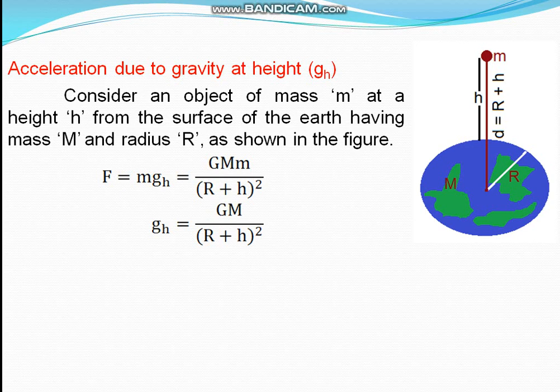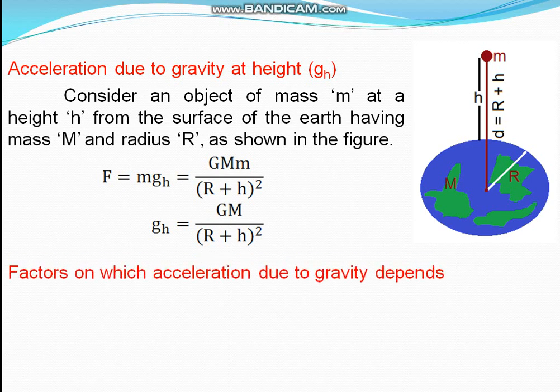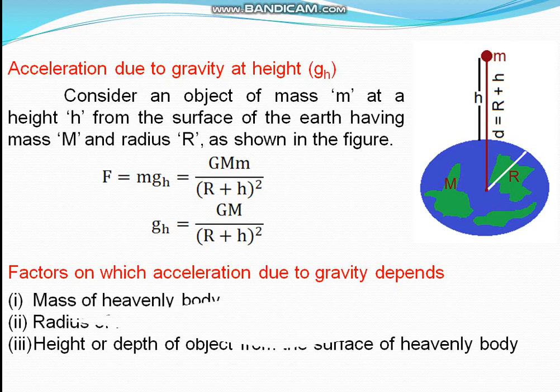The factors on which acceleration due to gravity depends: g-h equals G·M by (R plus h) whole square. There are mainly three factors — mass of the heavenly body (capital M), radius of the heavenly body (capital R), and height from the surface of the heavenly body (h).